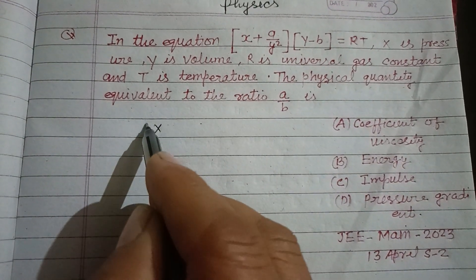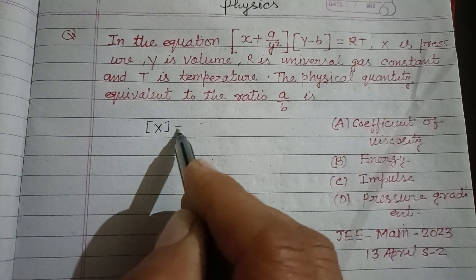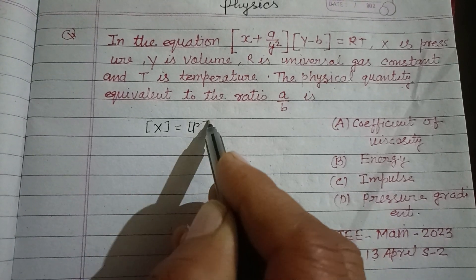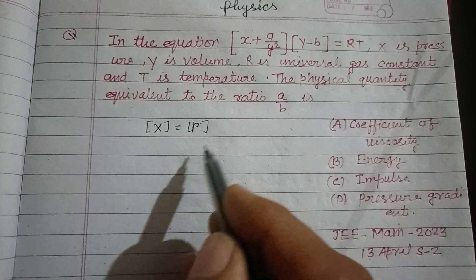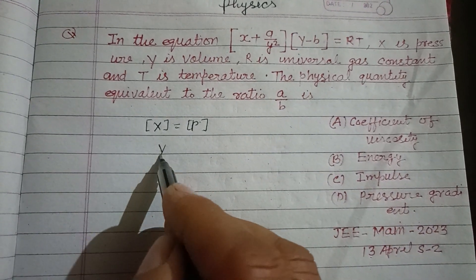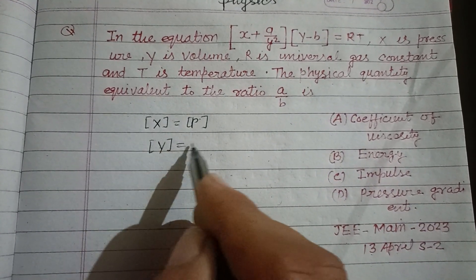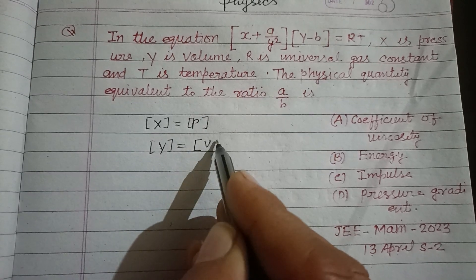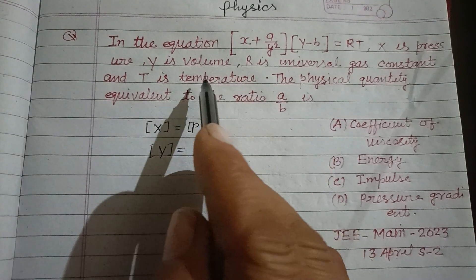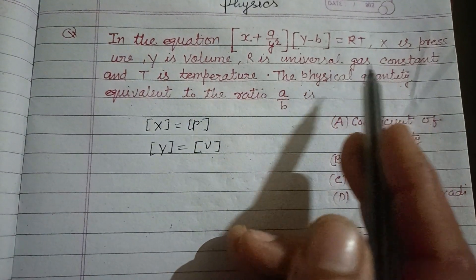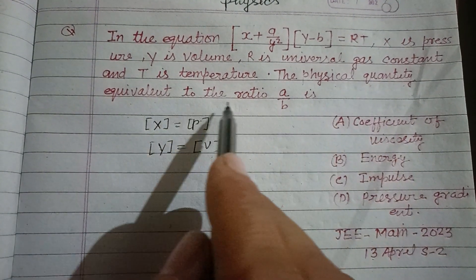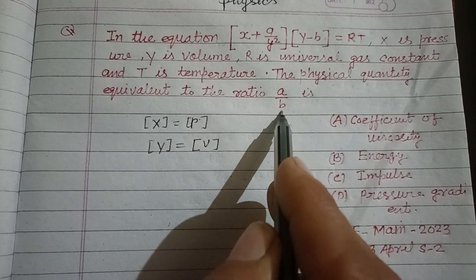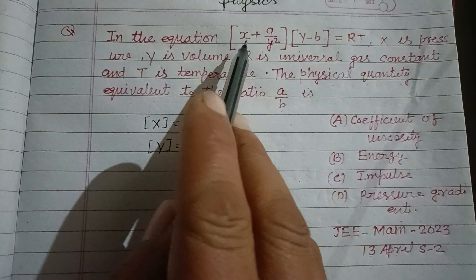x is pressure, y is volume, R is the universal gas constant, and T is temperature. The physical quantity equivalent to the ratio a/b is what we need to find.